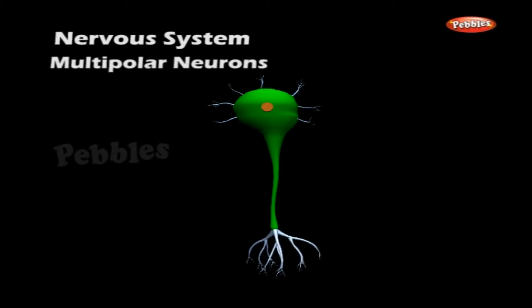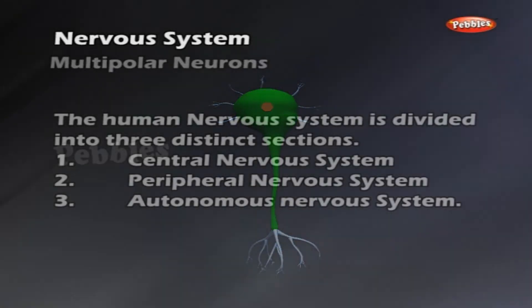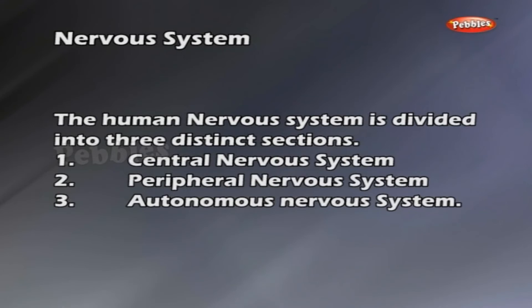The human nervous system is divided into three distinct sections: 1. Central nervous system, 2. Peripheral nervous system, and 3. Autonomous nervous system.